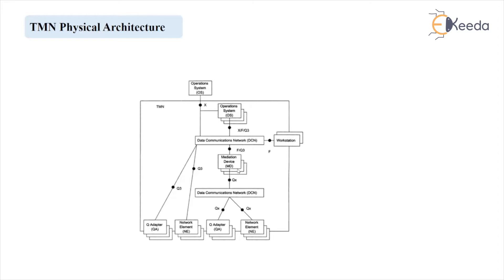In this way, there are five types of physical blocks representing the five functions. The operation system is again there; it is connected to the meditation device. As shown in the figure, the operation system is there which is going to connect with the meditation device function. It will directly send the data to the other functions also, but via the data communication network block. This is the difference between the functional architecture and physical architecture.